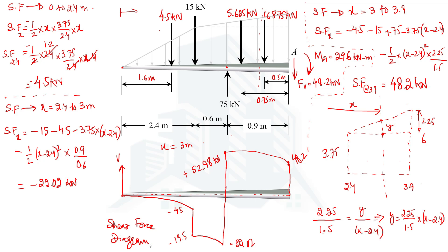The shear force equations have been derived for each region where the loading changes. To find the shear force at any point, substitute the x value into the appropriate regional equation — for example, use the 2.4–3 m equation for that range, or the 3–3.9 m equation for that range. In the next video, we will calculate the bending moment for this type of loading.